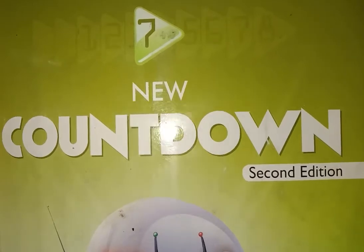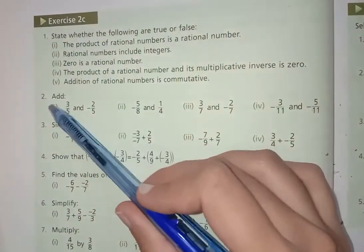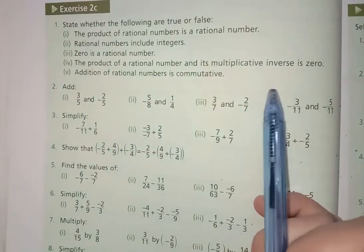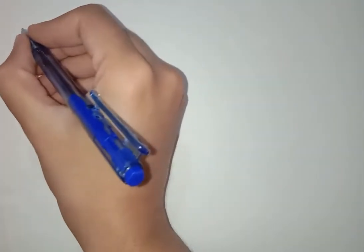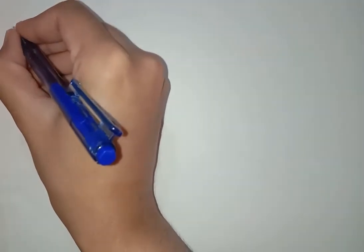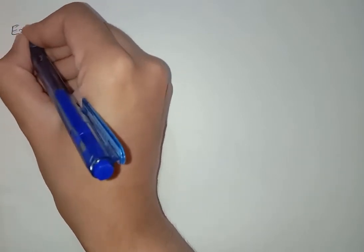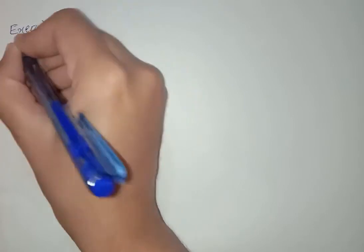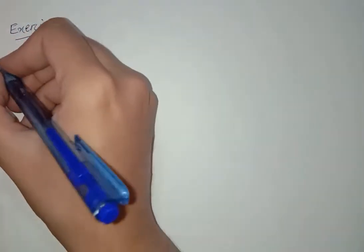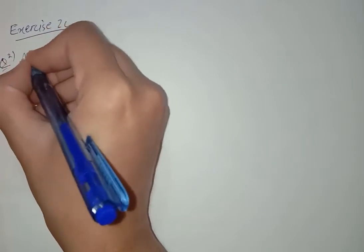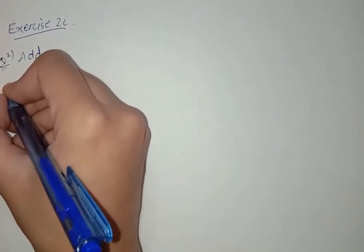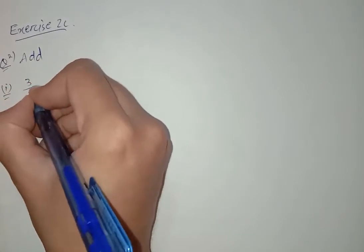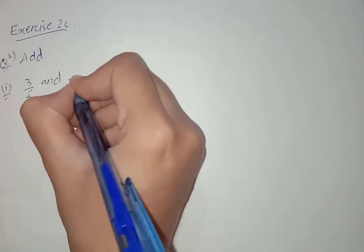Today our book is 7 New Countdown Second Edition and we will start Exercise 2C, question number 2. We have to add these values. Question number 2, part number 1 is 3 by 5 and minus 2 by 5.